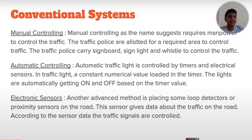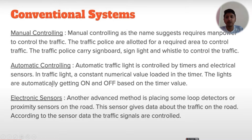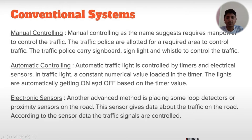Looking at conventional systems: manual controlling requires manpower — traffic police are allotted to required areas carrying sign bolts, sign lights, and whistles. Automatic controlling is managed by traffic signals — the red, green, and yellow lights we learned about from an early age — providing automatic control of traffic signals.